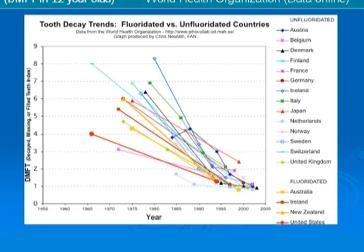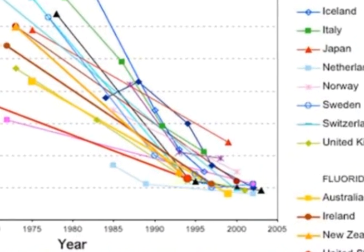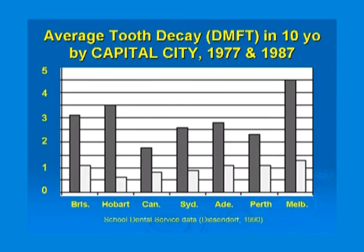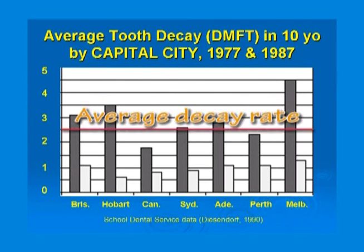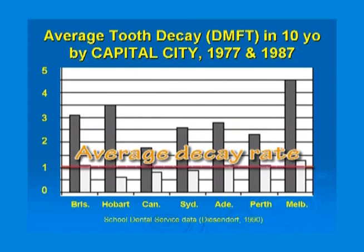This is backed up by a comparison of 14 countries that do not fluoridate with four countries that do. Since 2005, just about every one of these countries averages one cavity per child of tooth decay. In Australia, the rates of tooth decay have also dropped since 1977 — that's the grey areas — to 1987, which is the white areas. This has occurred not just for the cities which fluoridate, but also Brisbane, which does not fluoridate its water.